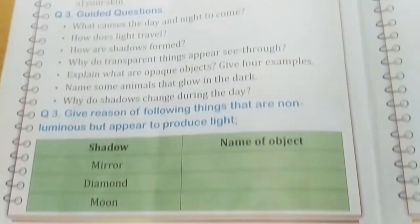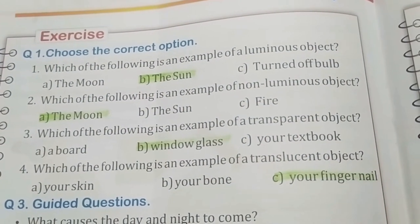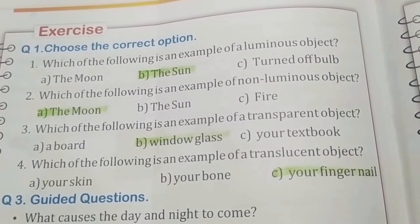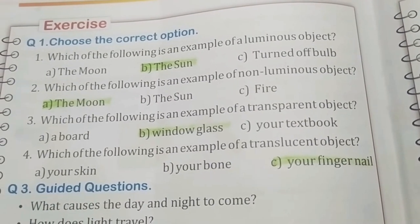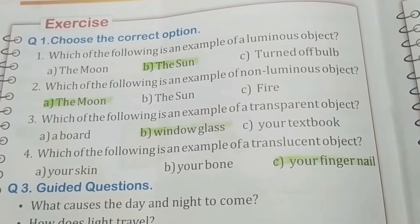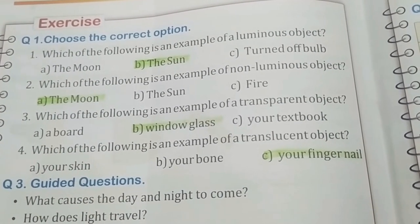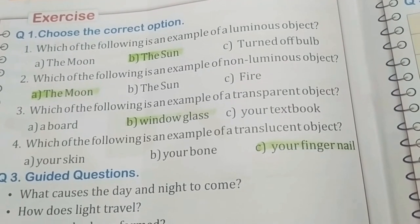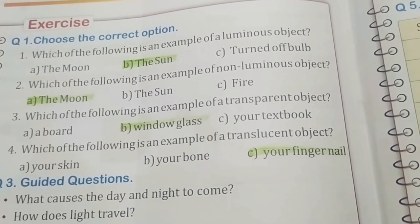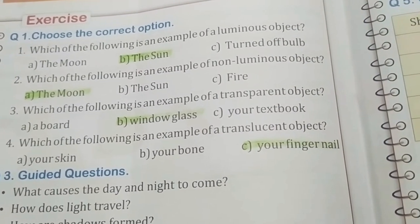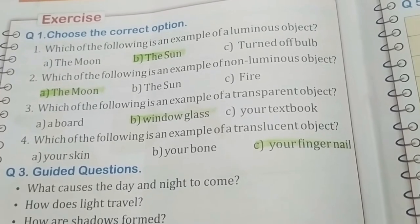At page number 70 is the exercise. Question number 1 is choose the correct option — I have pointed out the answers with a highlighter. Which of the following is an example of a luminous object? The sun. Which of the following is an example of a non-luminous object? The moon. Which of the following is an example of a translucent object? Your fingernail.